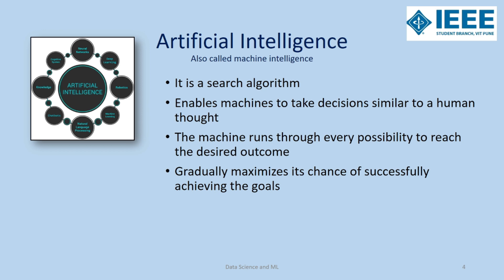Artificial intelligence has various elements which include neural networks, deep learning, robotics, machine learning, natural language processing, chatbots, cognitive systems, etc.